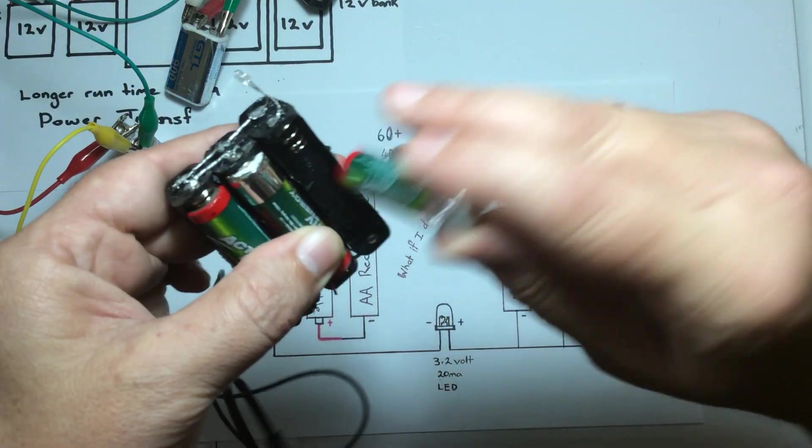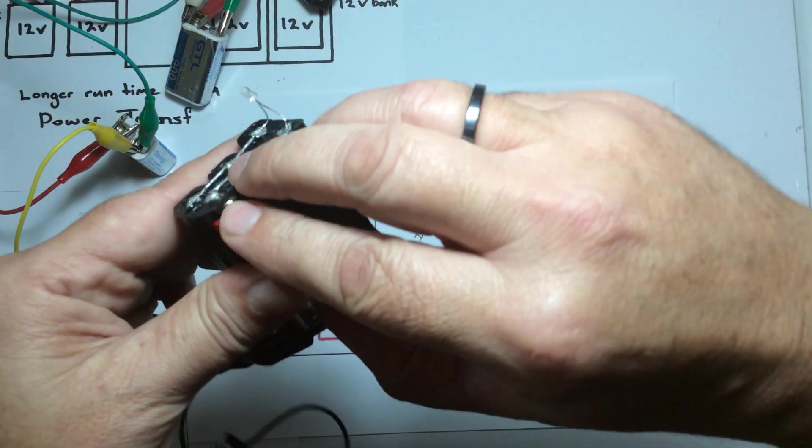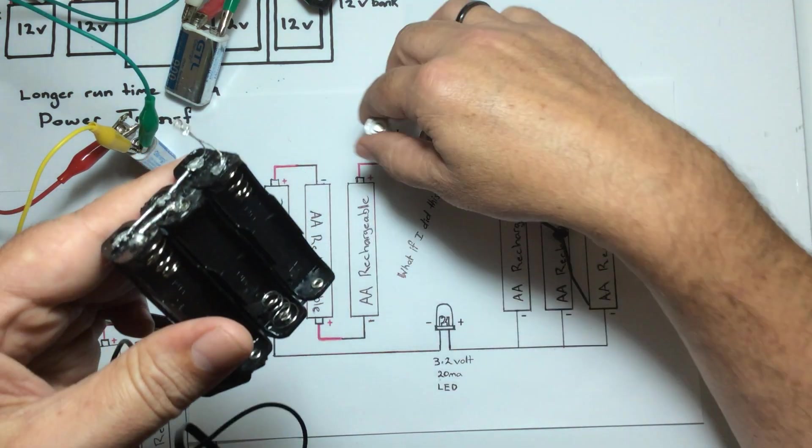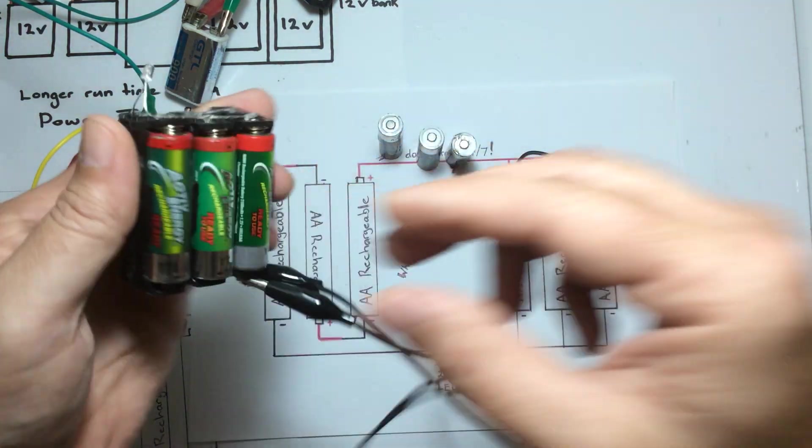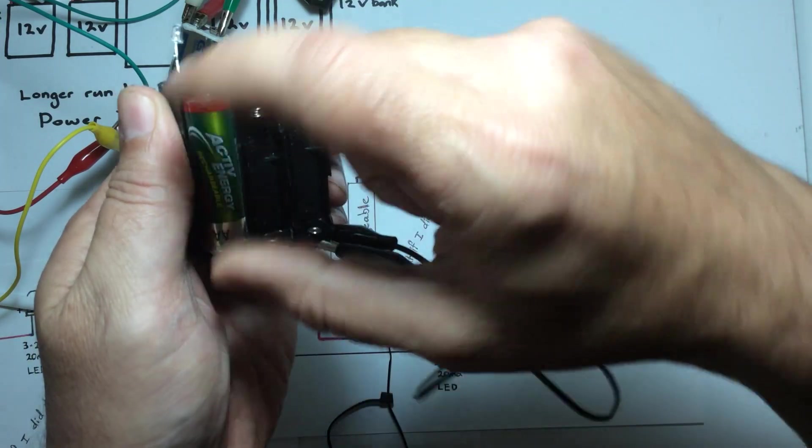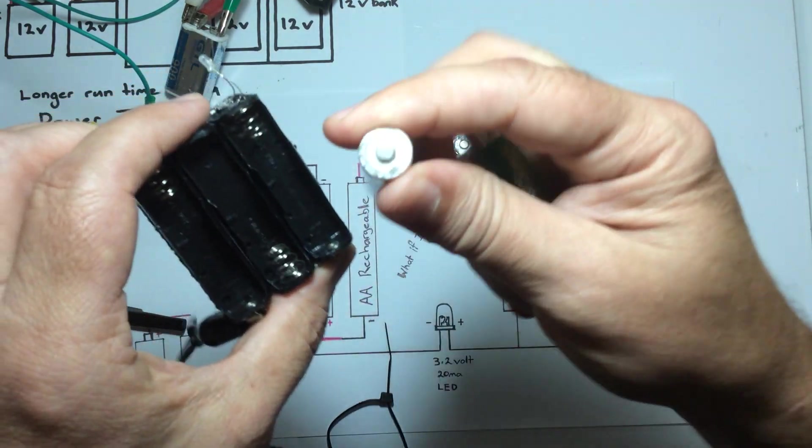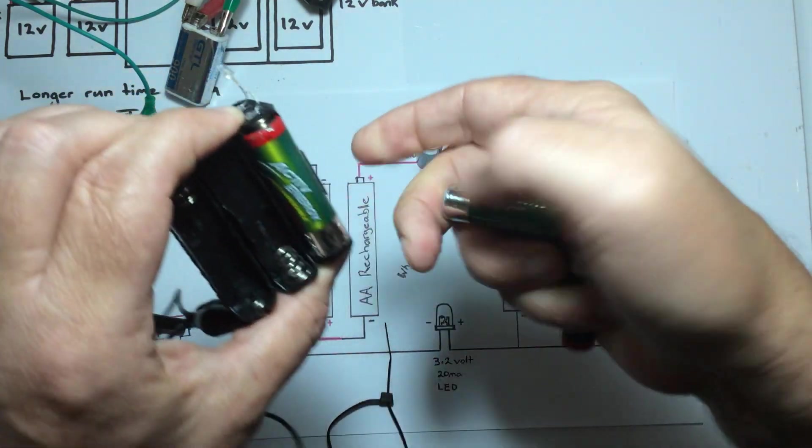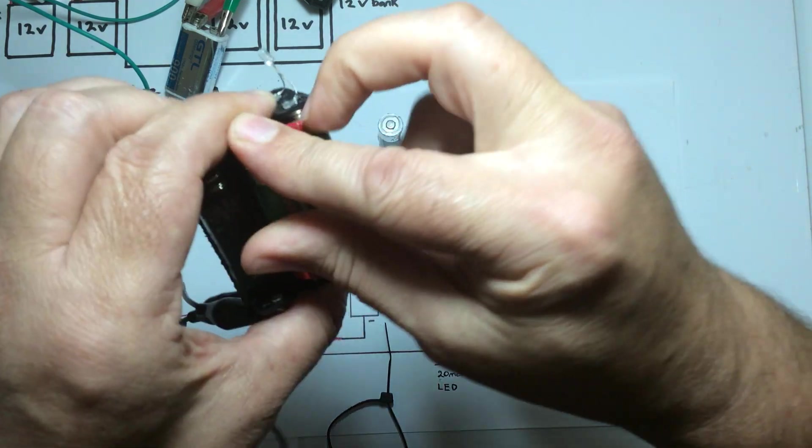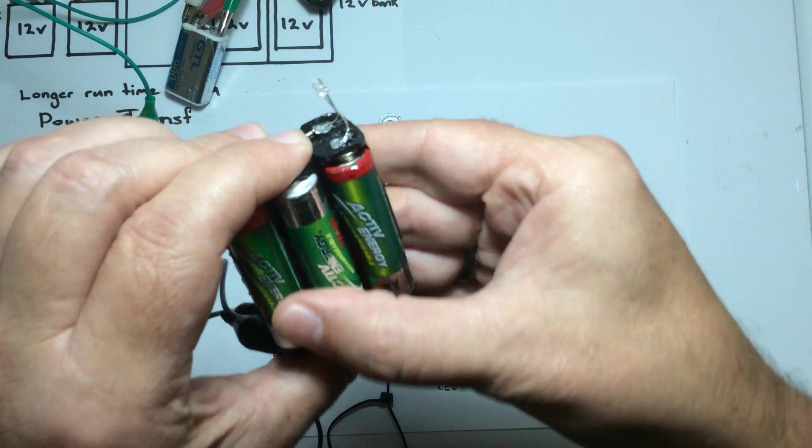We take our drive battery first, place them there, and then we will take the receiving batteries and we will place them into the drive side of the circuit which is in series making 3.6 volts.